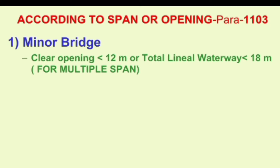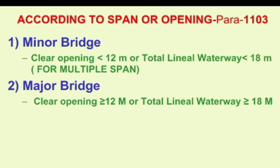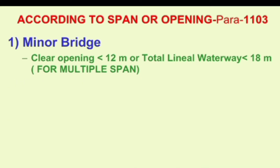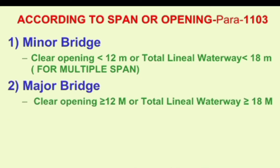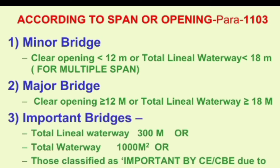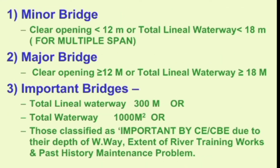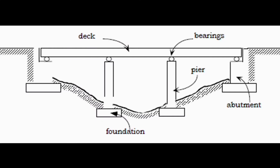If the clear opening is 2 to 3 meters, the distance classification applies. If the opening is above 12 meters, this is classified as a major bridge. A larger bridge is above 3 meters. The first bridge length is around 1000 meters. This is an important bridge classification.